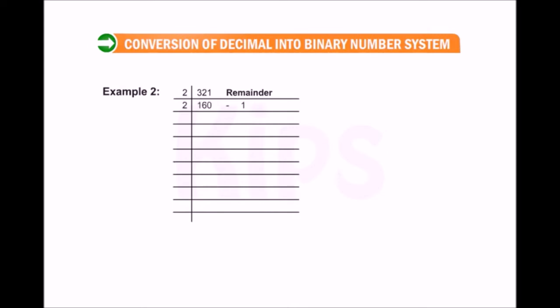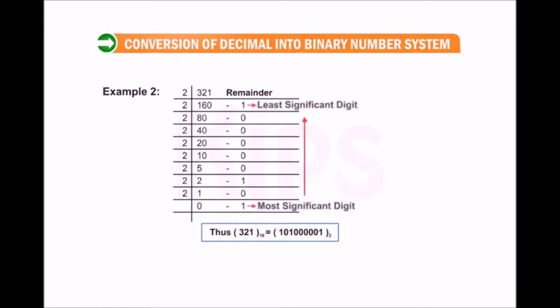Dividing 160 by 2 gives us quotient 80 and remainder 0. We keep on dividing till we get quotient 0. So 321 in decimal is written as 101000001 in binary.